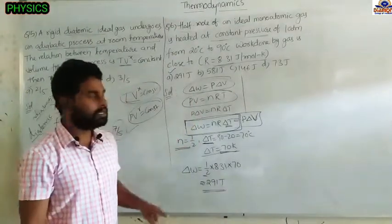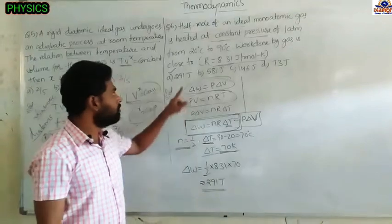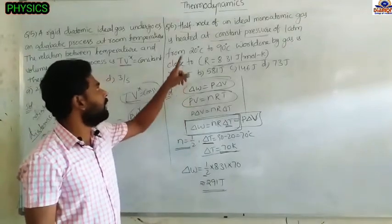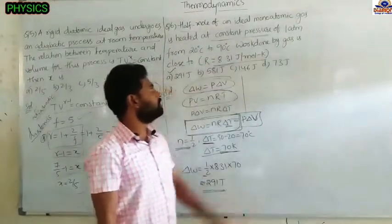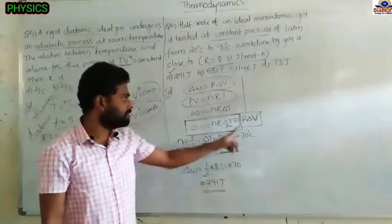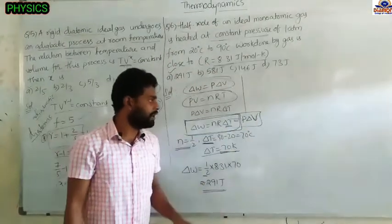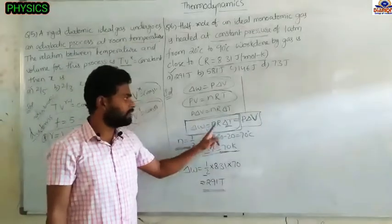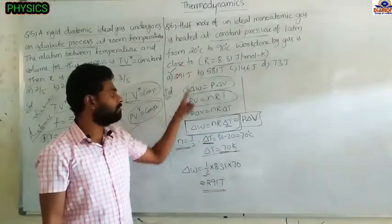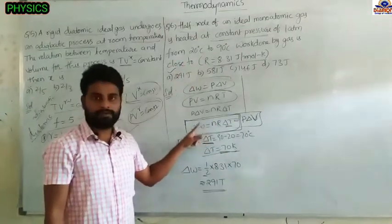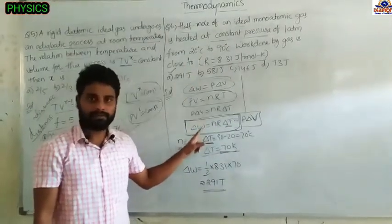Remember: at constant pressure, work done has two equivalent formulas — P ΔV and nR ΔT. Choose based on the given data.